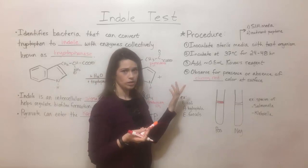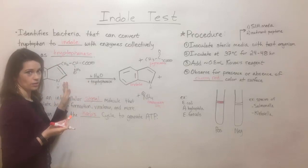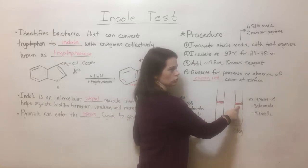However, if there is no indole present because there was no tryptophanase to break down the tryptophan that was in the media, then you end up with just a yellow color here. I don't have a yellow marker, so I'm using orange today, but this would be a bright yellow instead of a bright red.